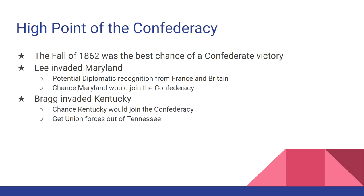Many historians consider the fall of 1862 the high point of Confederate power and their best chance at victory. The Confederacy launched two simultaneous offensives: Robert E. Lee invaded Maryland, and Braxton Bragg invaded Kentucky. Lee's goal was to win in Maryland to potentially gain recognition from France and Britain and possibly bring Maryland into the Confederacy. In Kentucky, the goal was to get Kentucky to join the Confederacy willingly and push Union forces out of Tennessee. When both invasions failed, the Confederacy was never again powerful enough to launch such offensives — marking a major turning point in the war.